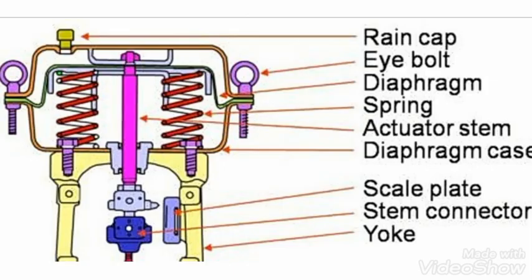Here you can see the different parts of the actuator: diaphragm spring, actuator stem, diaphragm case, scale plate, stem connector, and yoke. These are all the different parts of a pneumatic actuator.